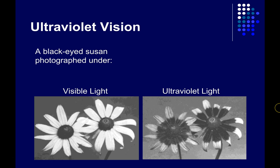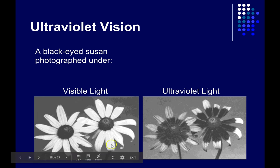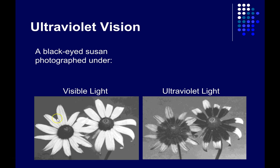But not all species of animals and insects perceive the same wavelengths of light that we do. This can offer an advantage for some species. For example, this is showing you a black-eyed Susan photographed just under visible light.